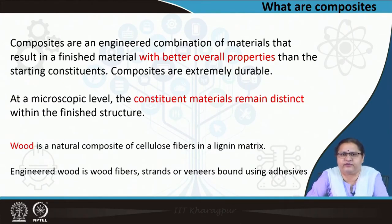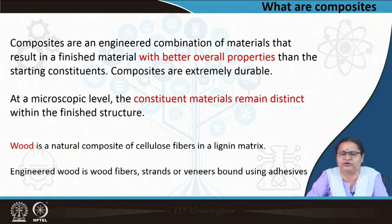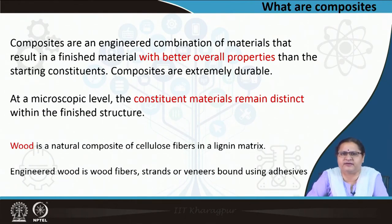At a microscopic level, each constituent remains distinct — there is no chemical reaction happening. The materials like sand and cement bound together with water to form a gel, but the materials did not change property. Wood is a natural composite which grows naturally, where cellulose fibres are in the lignin matrix. Lignin holds the cellulose fibres together to give it strength.